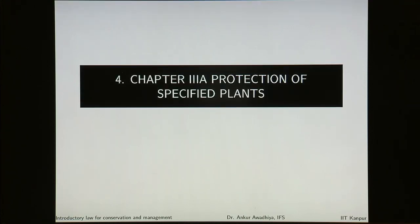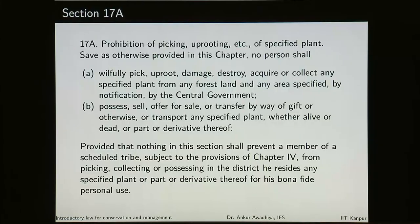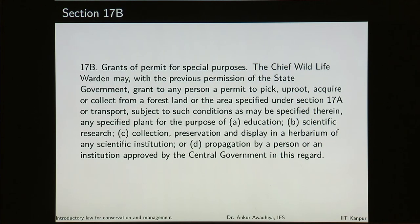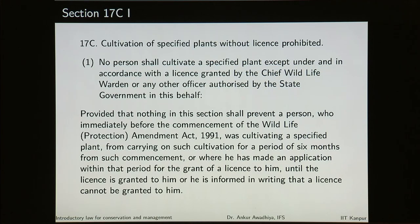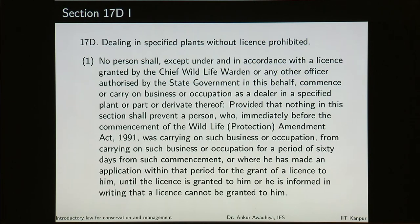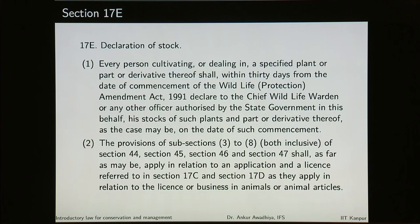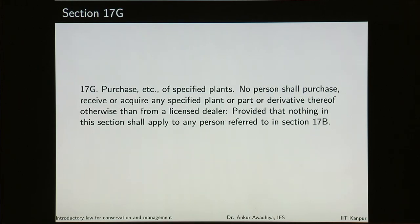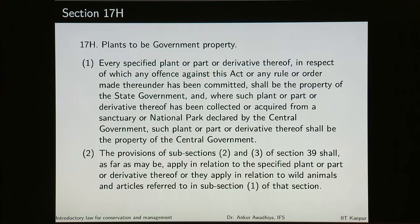Chapter 3A deals with protection of specified plants. Picking, uprooting, etc. of specified plants is prohibited. The chief wildlife warden can grant permits for special purposes. Cultivation of specified plants without license is prohibited. Dealing in specified plants without license is prohibited. People dealing with these plants have to declare their stock and cannot purchase these specified plants without a license, and these plants are to be protected in government property.